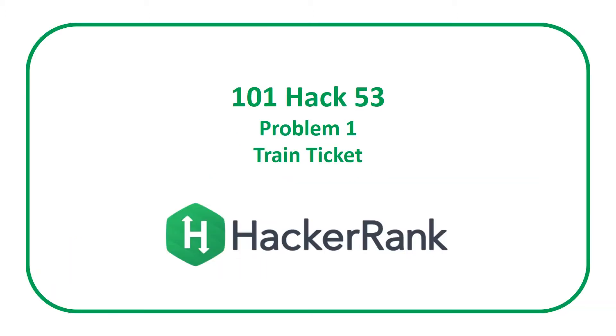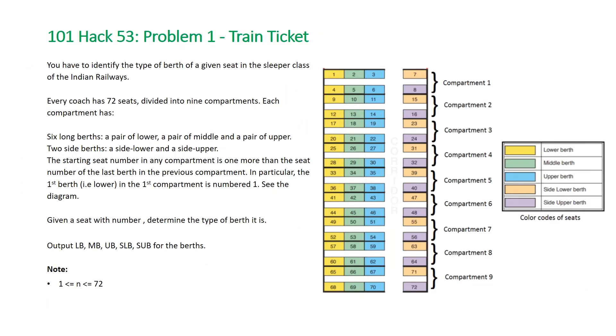Our first problem is problem one from HackerRank 101 hack 53 entitled Train Ticket. The problem states you have to identify the type of berth of a given seat in the sleeper class of the Indian railways. Every coach has 72 seats divided into nine compartments. Each compartment has six long berths, a pair of lower, a pair of middle, and a pair of upper, and two side berths, a side lower and a side upper. The starting seat number in any compartment is one more than the seat number of the last berth in the previous compartment. In particular, the first berth, i.e. lower in the first compartment is number one. See the diagram.